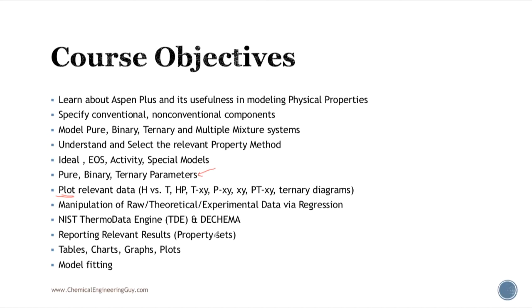We will be plotting a lot of information for pure substances, mixtures, and more. The most relevant plots will include property versus property — for example, enthalpy versus temperature for a pure substance, or enthalpy and entropy versus pressure. We will also model the composition of binary systems, such as liquid and vapor phase composition at constant pressure with temperature changing, or at constant temperature with pressure changing.